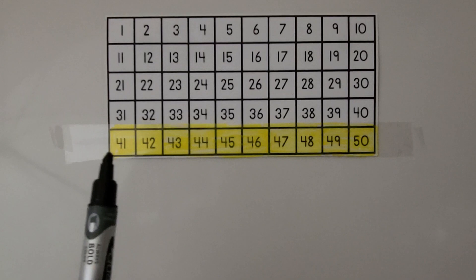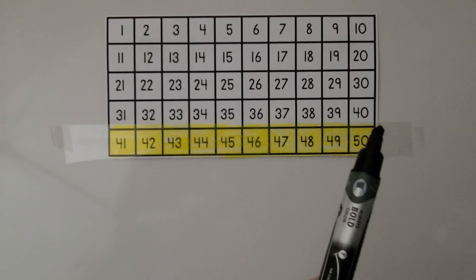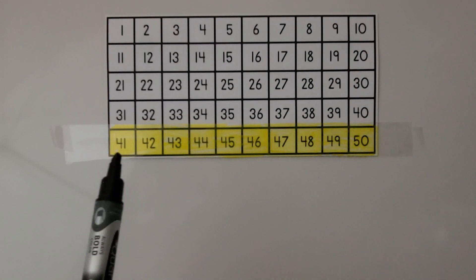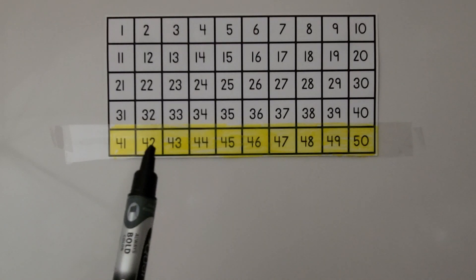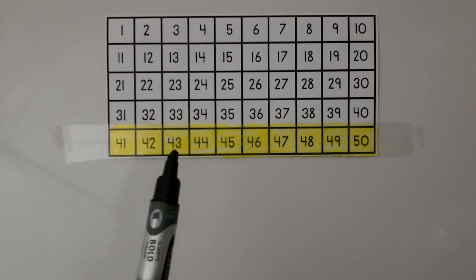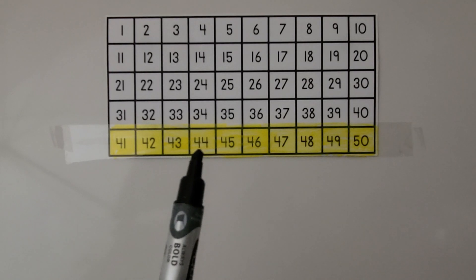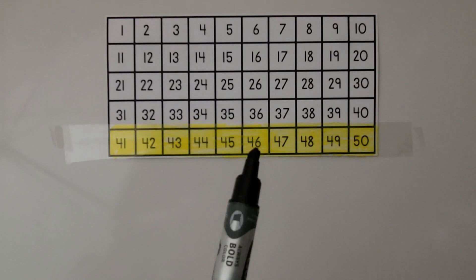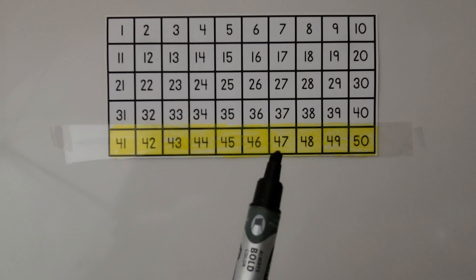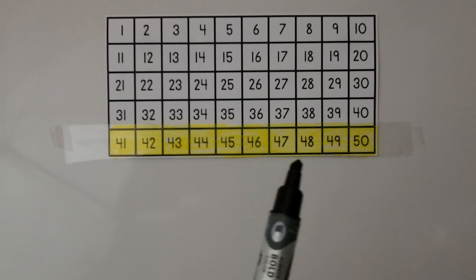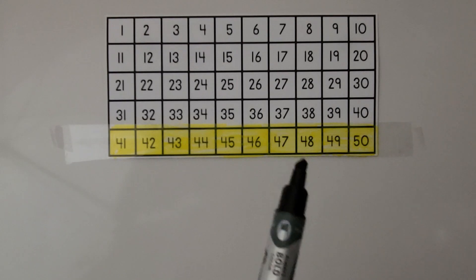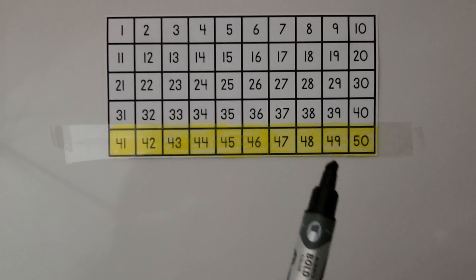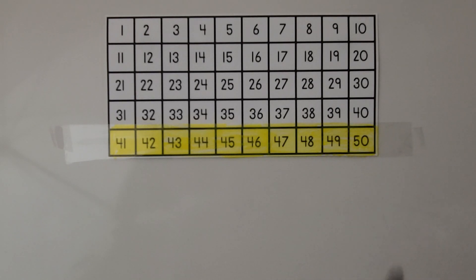So we go to the next row below and read 41, 42, 43, 44, 45, 46, 47, 48, 49, 50.